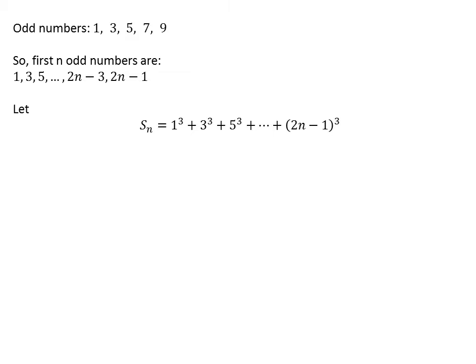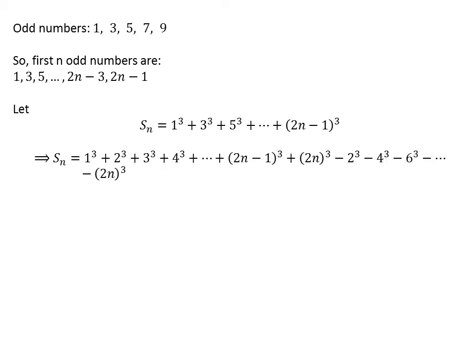That is, cube of 2, cube of 4, cube of 6, and so on up to cube of 2 times n. So, Sn equals cube of 1 plus cube of 2 plus cube of 3 plus cube of 4, and so on up to cube of 2n, minus cube of 2 minus cube of 4 minus cube of 6, and so on up to cube of 2n.